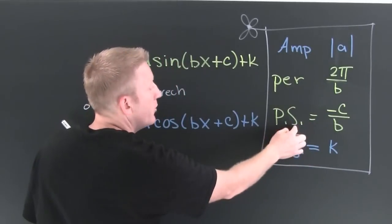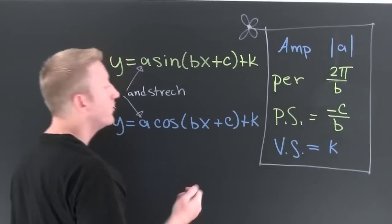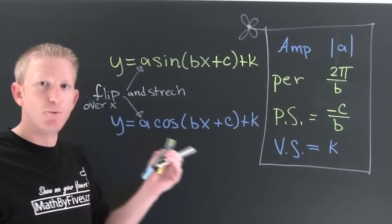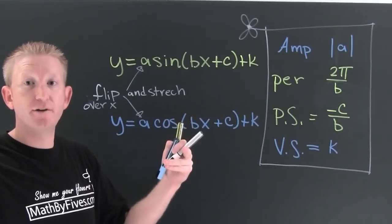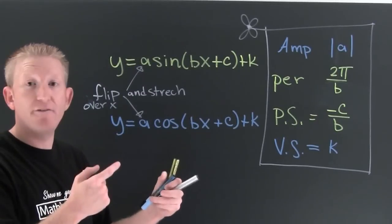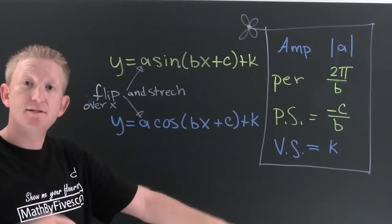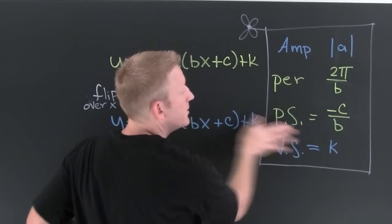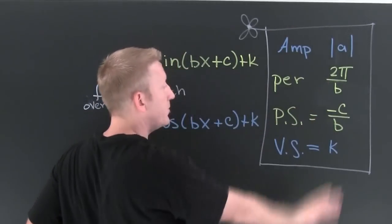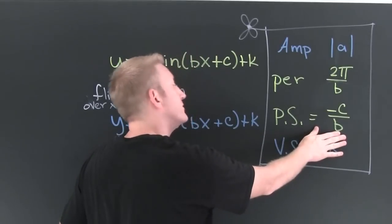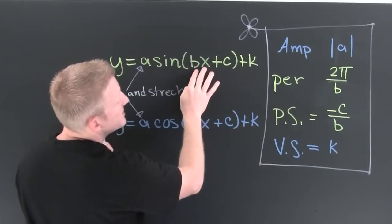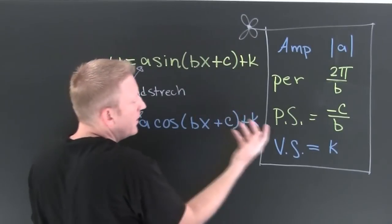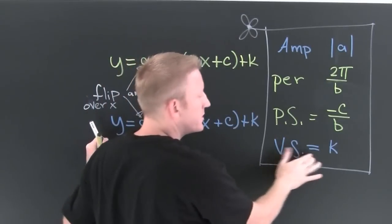Now what do we want to see? My phase shift — we use 'ps' because you do it last. When we grab these guys, we're going to flip it, graph it, label it, and then shift it — both side to side and up and down. The side-to-side shift, your phase shift, can be found by taking minus c over b. And your vertical shift.